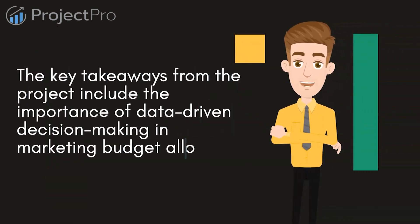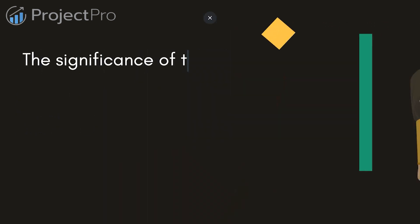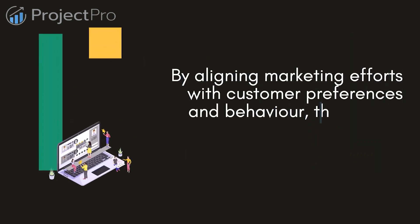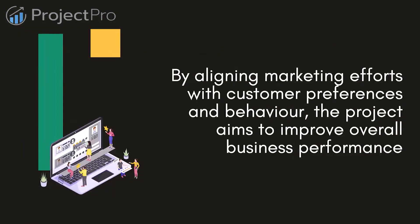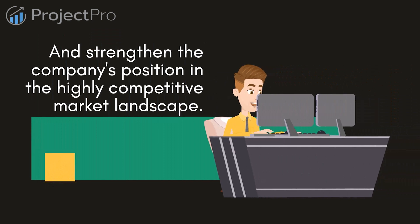The key takeaways from the project include the importance of data-driven decision making in marketing budget allocation, the use of machine learning algorithms to optimize budget allocation and maximize revenue and ROI, the significance of targeting the right users through appropriate channels for improved conversions, and the impact of targeted marketing on customer acquisition costs and retention. By aligning marketing efforts with customer preferences and behavior, the project aims to improve overall business performance and strengthen the company's position in the highly competitive market landscape.